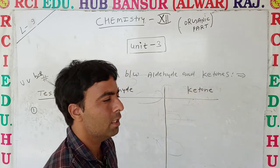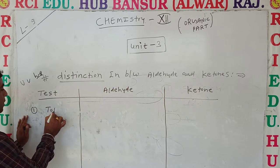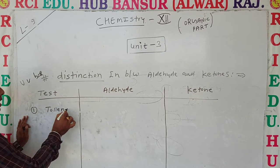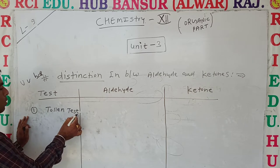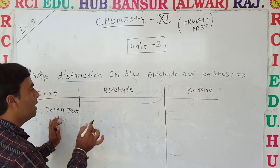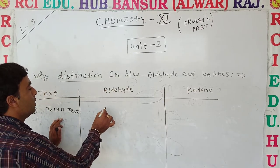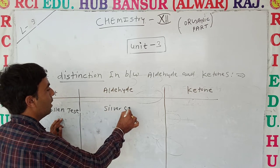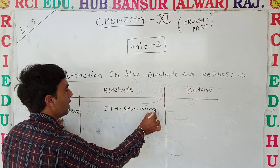First of all is the Tollens test. That is, we already know Tollens reagent. What is Tollens test? It uses ammoniacal silver nitrate. Aldehyde gives a silver color mirror — this is the silver mirror test.